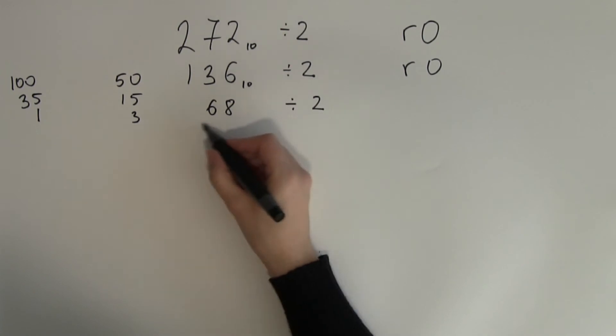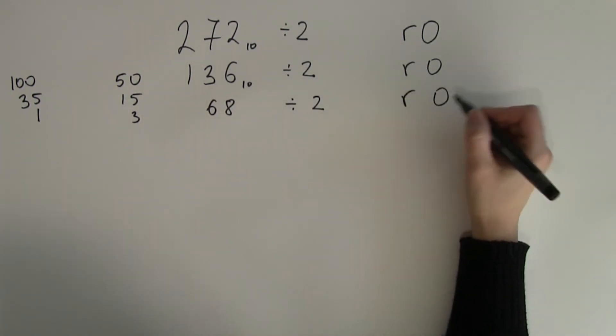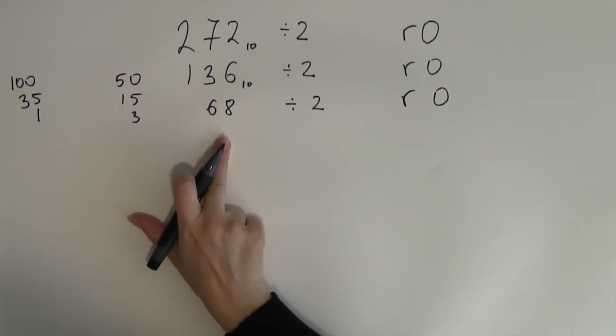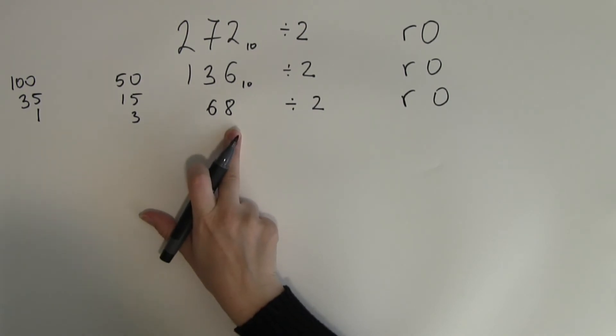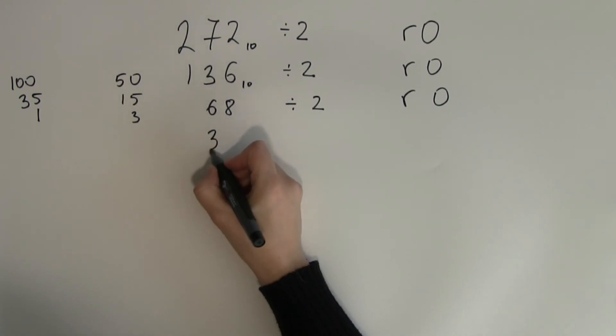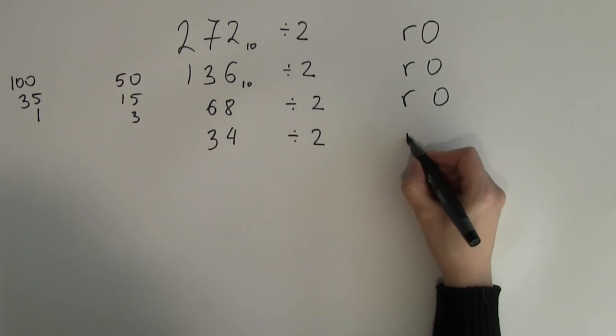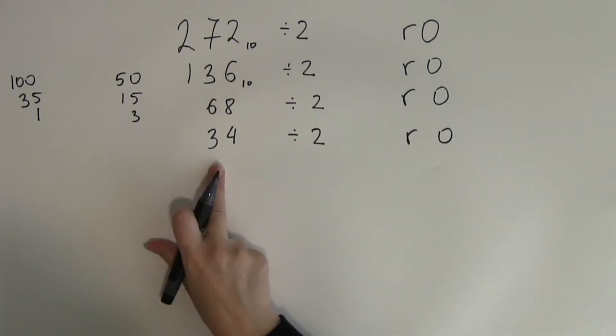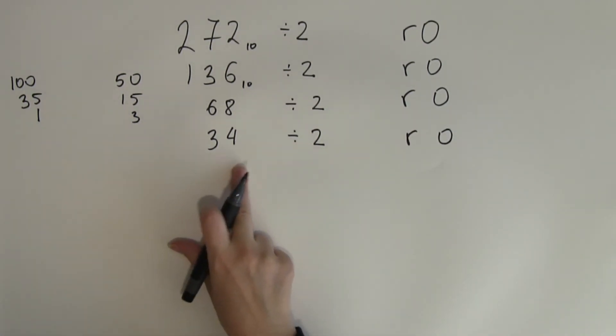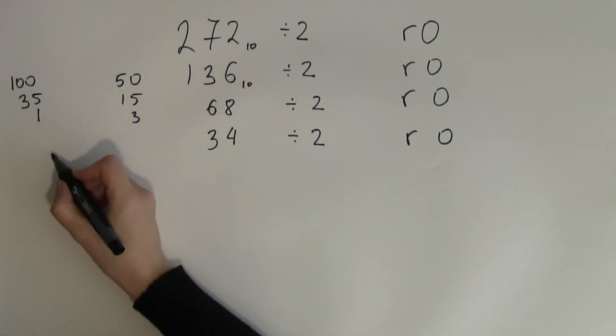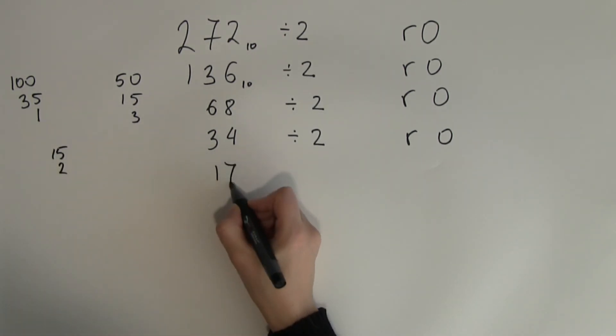Divide that by 2. That's going to give me a remainder of 0 because that's an even number. And what's the half of 68? Well half of 60 is 30 and half of 8 is 4. So this will be 34. Divide that by 2. The remainder will be 0 because this is an even number. 34 might not be as easy to half as 68 was because half of 30 is 15. And half of 4 is 2. So that gives me 17.